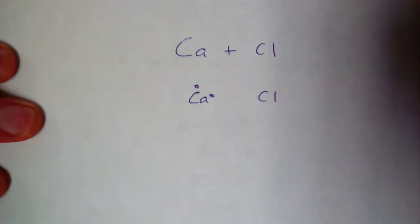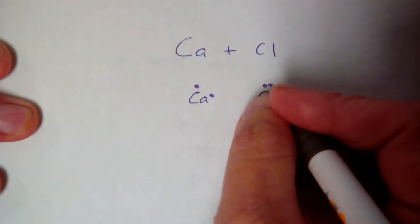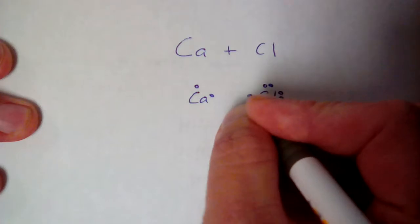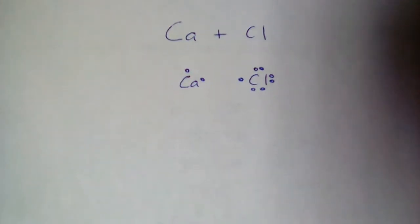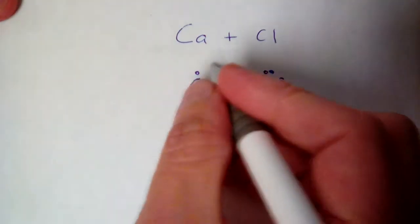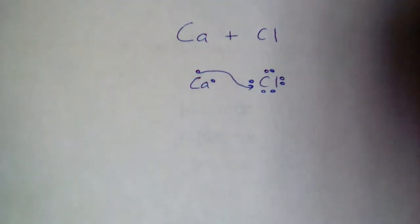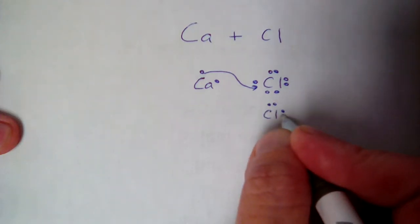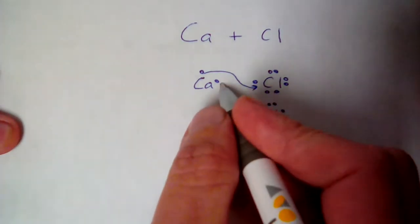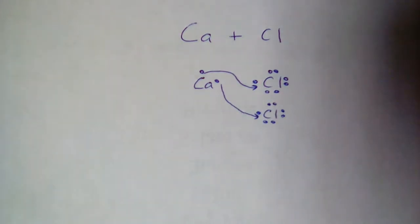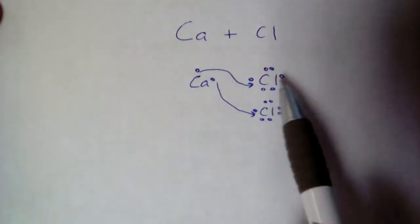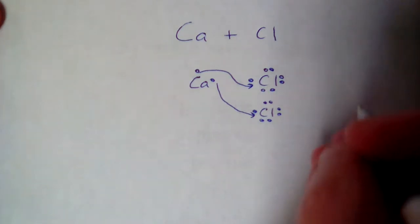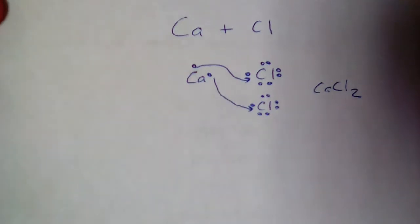Chlorine is in group 17, which has seven valence electrons. Our goal is to move electrons from the metal to the nonmetal to make everything stable. We can move an electron to the chlorine — that makes it stable — but it wouldn't be good for the calcium. Calcium goes from two valence electrons to one, which is more unstable. So we draw in another chlorine atom, giving us a second place to put that second electron. Now the metal is stable, both nonmetal atoms are stable with eight electrons. It took one calcium and two chlorines, so the formula is CaCl2.